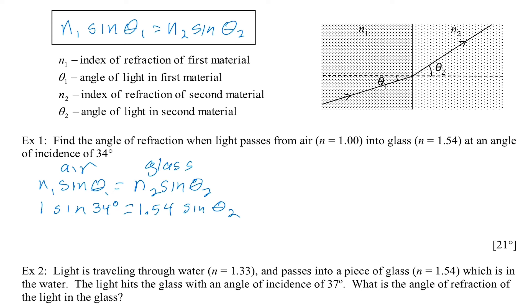1 sine 34 degrees. If I punch that in my calculator, it's 0.559 equals 1.54 sine θ2. I'm going to divide both sides by the 1.54. And I get 0.363 equals sine θ2.